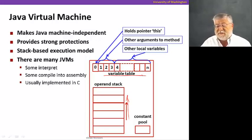Then there's space for other arguments to the method in the table and other local variables that might be in that method.